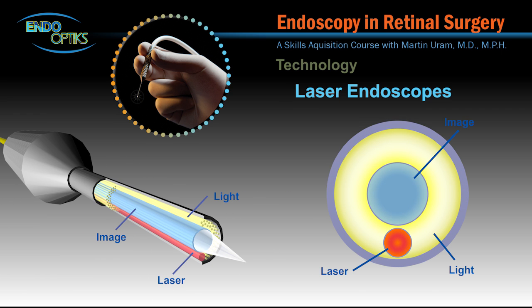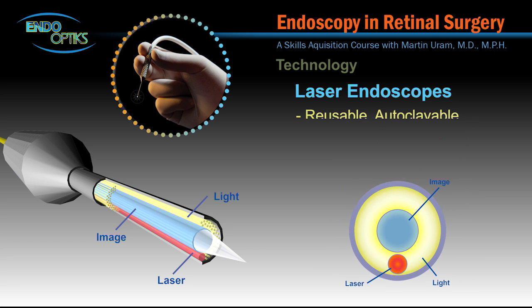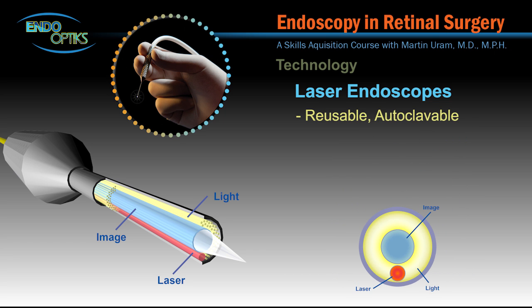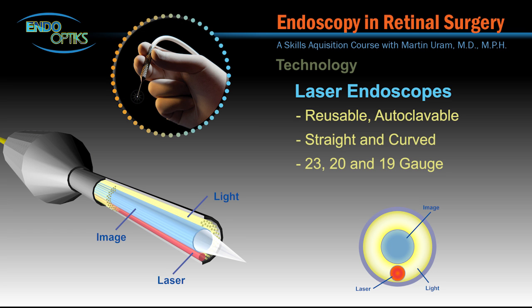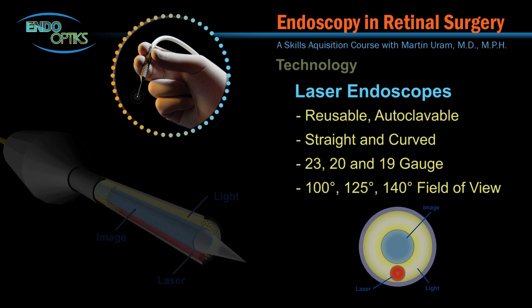These instruments are comprised of a central core of fiber optic imaging fiber, surrounded by a number of tiny light fibers and one embedded laser fiber. Depending upon the surgeon's requirements, they come in a variety of configurations, including straight or curved, 19 to 23 gauge, and various levels of resolution and field of view.